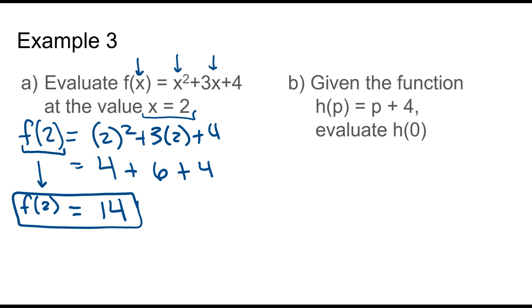Given the function h of p is equal to p plus 4, evaluate h of 0. So we've got h of 0. Anywhere there was a p, we're replacing it with 0. Well, that's just 4. You can bring that down. h of 0 is equal to 4.